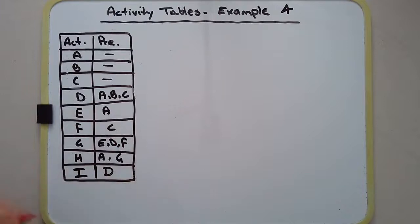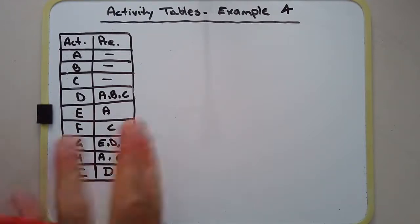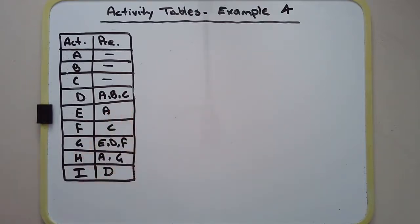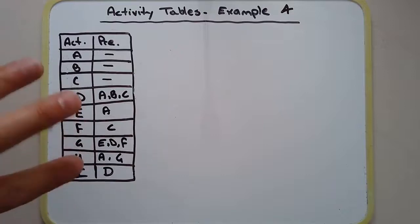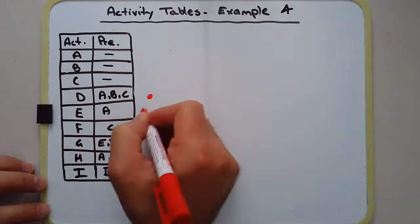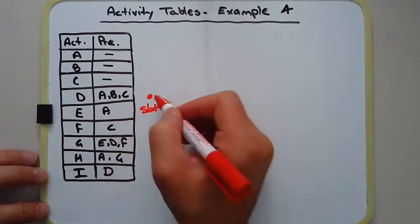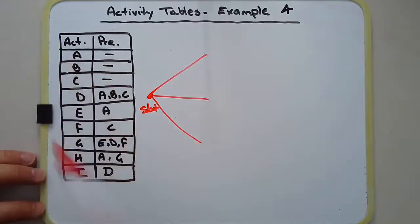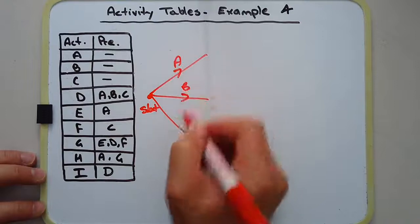There are certain things going on here that we have not seen in the other examples. I recommend that you draw these directed network diagrams in pencil first, because you're probably going to make a mistake or have to redraw the diagram to accommodate some relationship between an activity and its predecessor. We'll draw our starting vertex. Notice that A, B, and C do not have predecessors, so let's start with those.